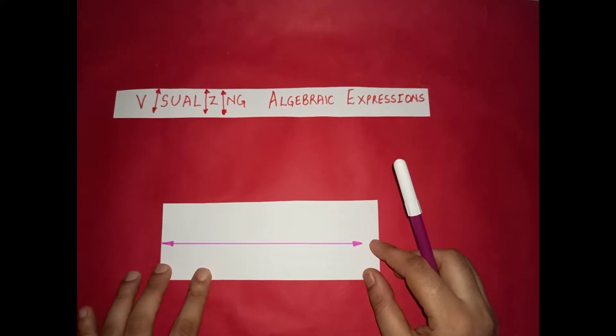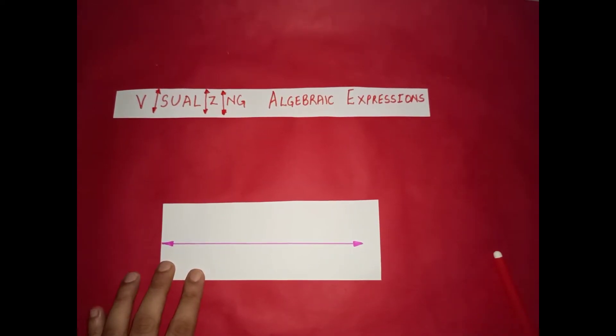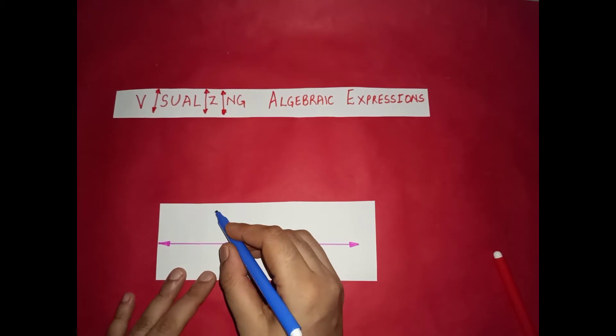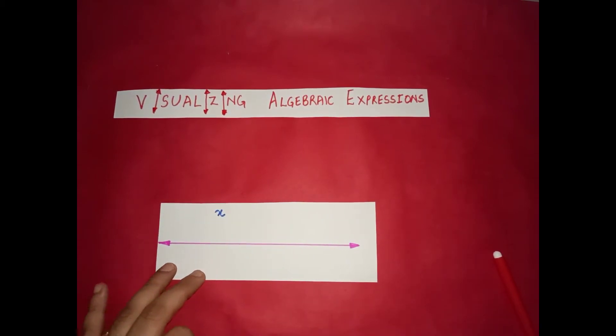Let's take some expressions and try to visualize using number lines. The first expression I would like to take is x. Now what is x? x is a variable.